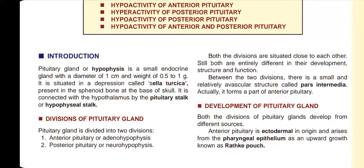Next, the divisions of the pituitary gland. There are two divisions. The first division is the anterior pituitary, also called adenohypophysis. The second division is the posterior pituitary, also called neurohypophysis. Even though the two divisions are located very close to each other, they differ in structural and functional development.